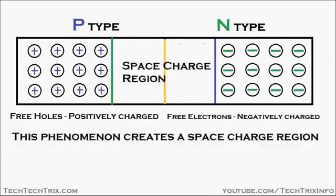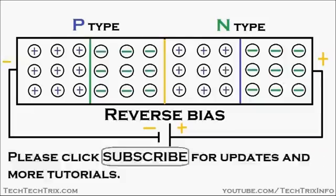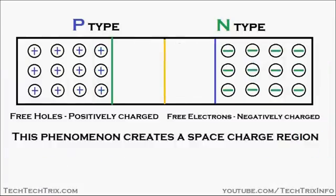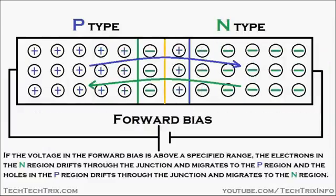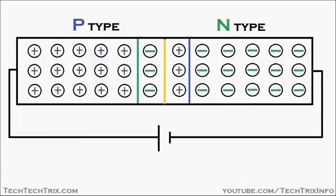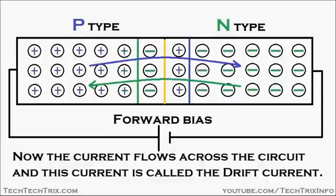This tutorial animation covers how a PN junction semiconductor works, what is forward bias and reverse bias, what is diffusion current and drift current, and what is avalanche breakdown.